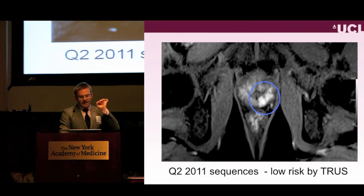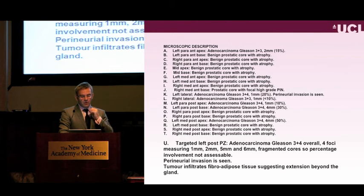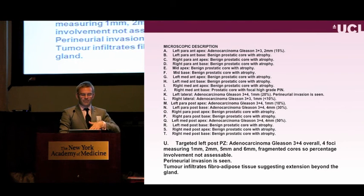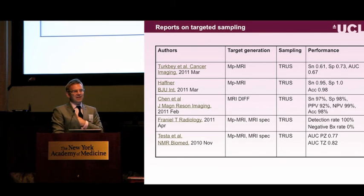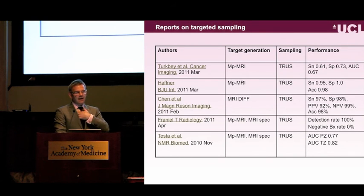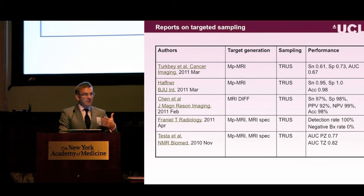Originally diagnosed with 2 mm of Gleason 3+3, he was monitored with MRI. Targeted sampling showed Gleason 3+4 with a maximum cancer core of 6 mm, and importantly the targeted sample showed tumor infiltrating fibroadipose tissue—suggesting extension beyond the gland. There is now an industry in targeting: four companies were at the AUA and EAU promoting software for MRI-guided targeting. Five published studies—four from 2011—document the accuracy being achieved, including an image-to-image registration system from the NIH group of Choiki and Pinto, alongside cognitive registration approaches.